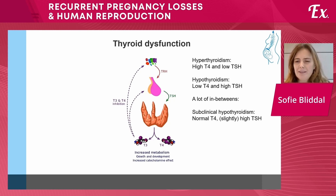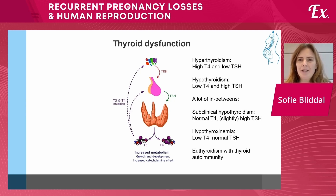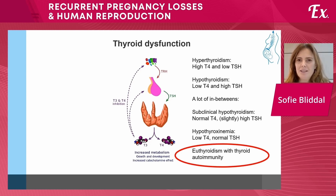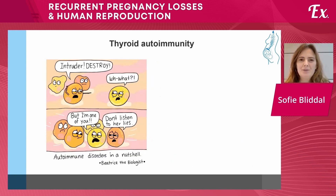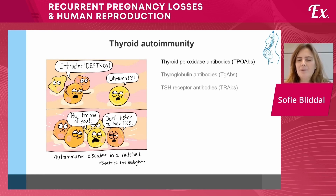There are many in-betweens discussed in reproduction: subclinical hypothyroidism, which is normal T4 but with a slightly high TSH; hypothyroxinemia with low T4 and normal TSH; and finally euthyroidism where both T4 and TSH are normal, but where thyroid autoimmunity is involved. This last condition has been the center of great attention for the past 10 years, and we will talk a lot about it today in the context of recurrent pregnancy loss.